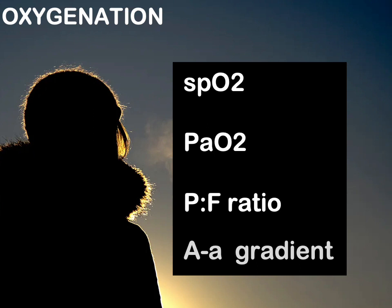Pulse oximetry done at the bedside is probably the easiest thing for us to do. Stats of less than 92 to 94 percent tells us that the patient is hypoxic. If we've got access to a blood gas machine, we need to look at the PaO2 — the arterial concentration of oxygen. If the patient is on room air and the PaO2 is less than 60, the patient has type 1 respiratory failure.